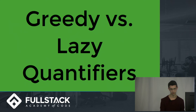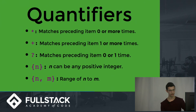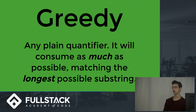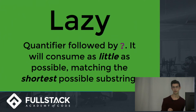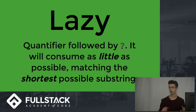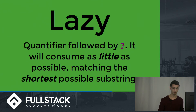Let's talk about greedy versus lazy quantifiers. A greedy quantifier is just a plain quantifier as shown — it says match as much as possible. So if you say match a number one or more times, it's greedy: it matches the longest possible substring. Lazy is when you follow any quantifier with a question mark. It says match that pattern as few times as possible — meaning once the condition is satisfied and something's been found, stop right there. Greedy keeps going until it can't find any more matches; lazy stops the first time it finds one.